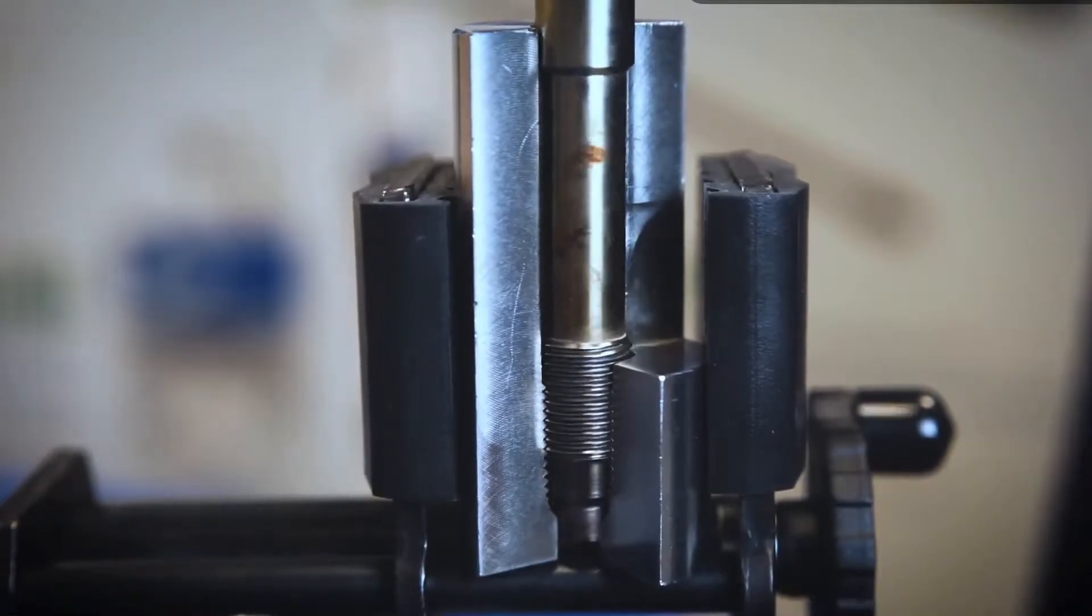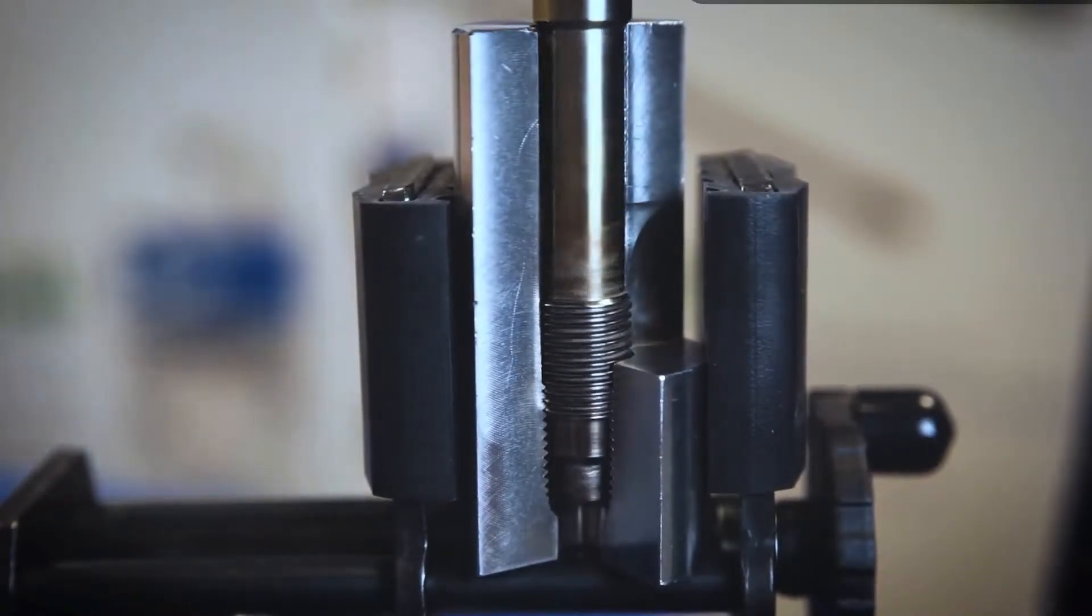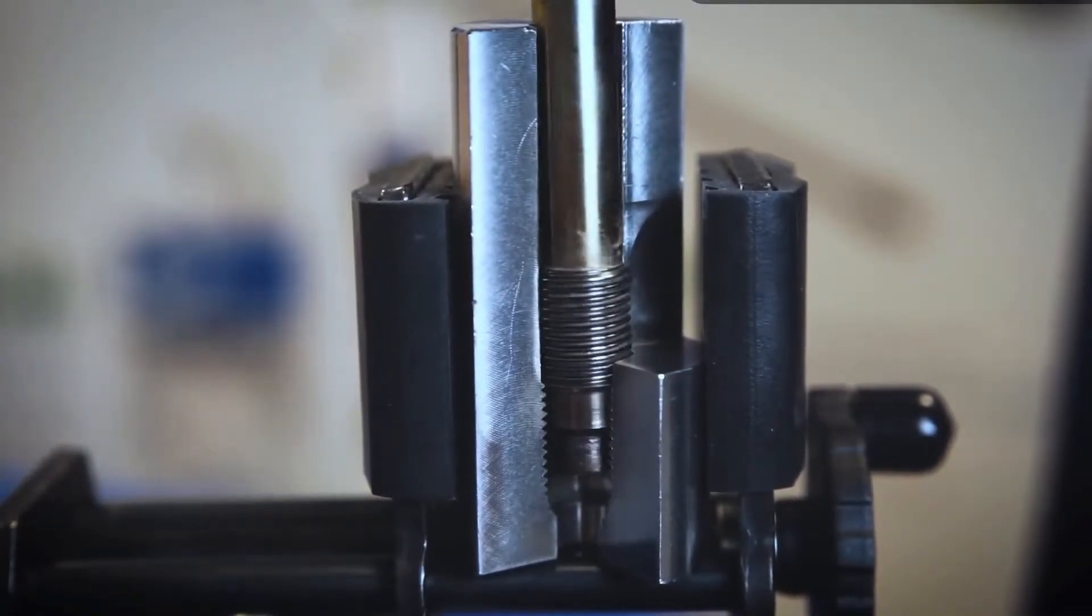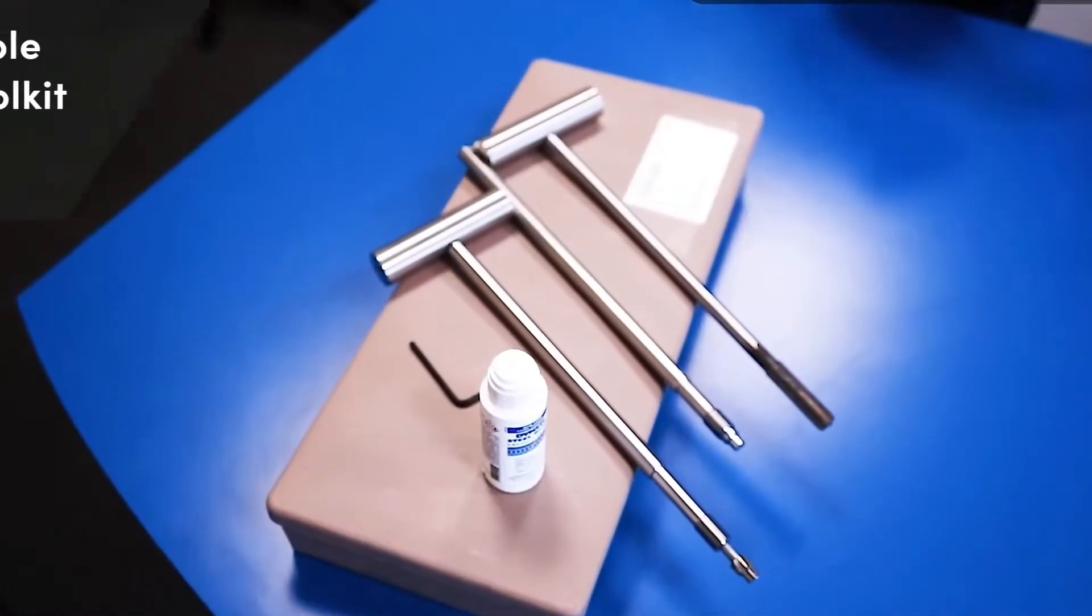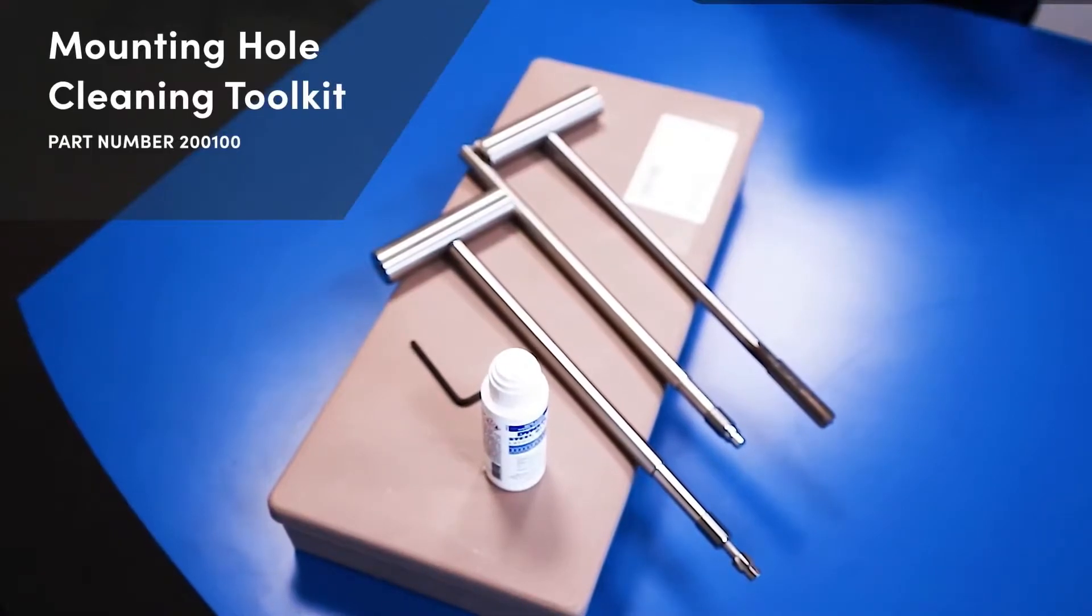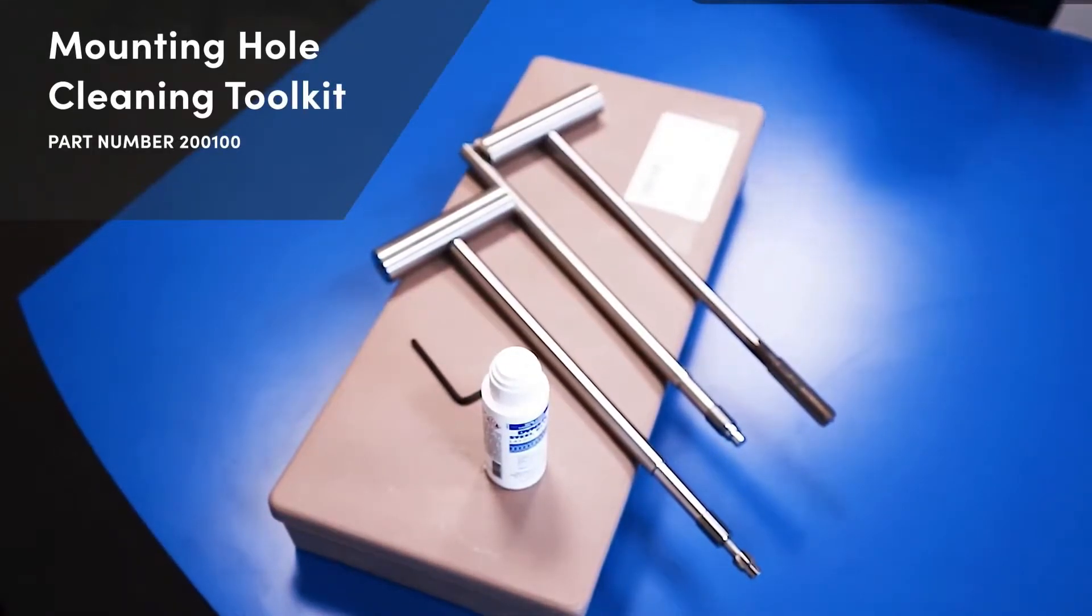With the sensor out of the mounting hole, the technician will now address any material that has entered the threaded area in the 45-degree seat. This is accomplished with the Dynisco mounting hole cleaning tool kit, which is highly recommended for routine maintenance of the mounting hole.